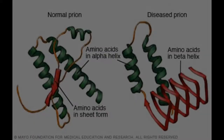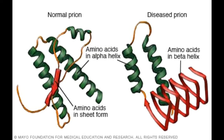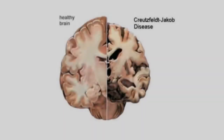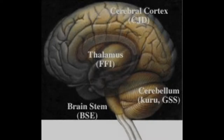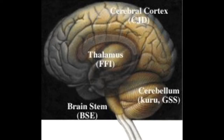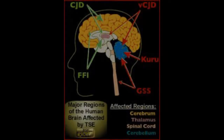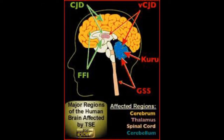CJD is caused by the transformation of the normal cellular prion protein, PrP, into a structurally changed form called PrP scrapie, which replaces, replicates, and accumulates throughout the human brain. Because the prion is similar to the non-prion form of the protein, the prion is able to evade the innate immune system. It is only when there are high numbers of the prion that the immune system begins to attack the prions, but also the PrP protein found in human cells.